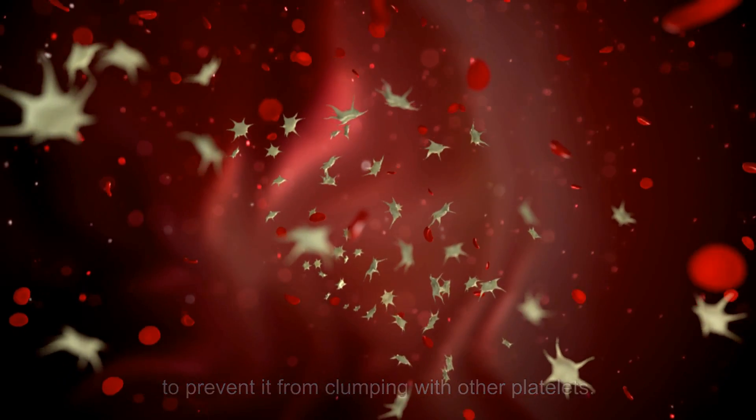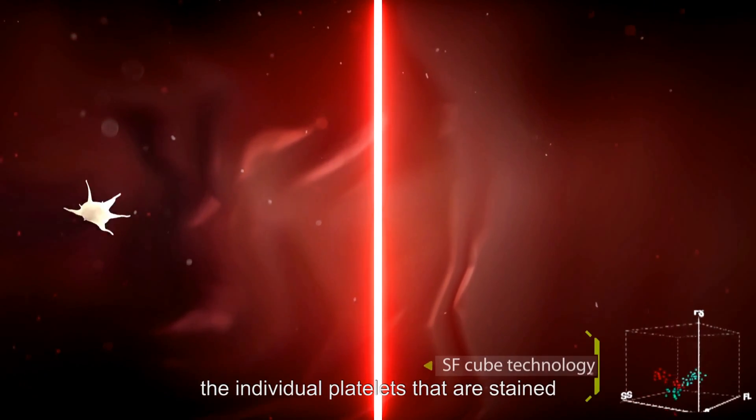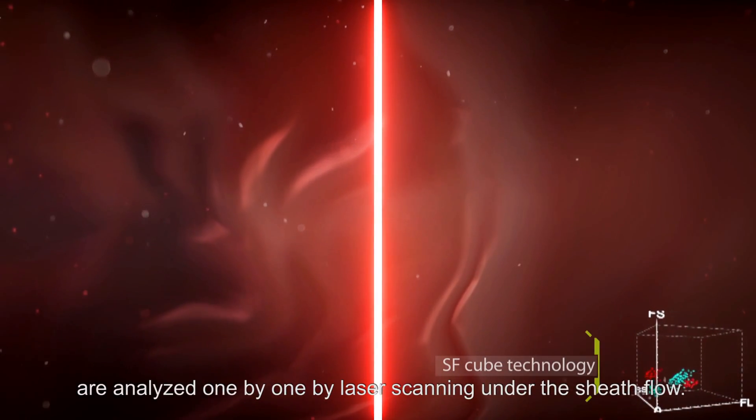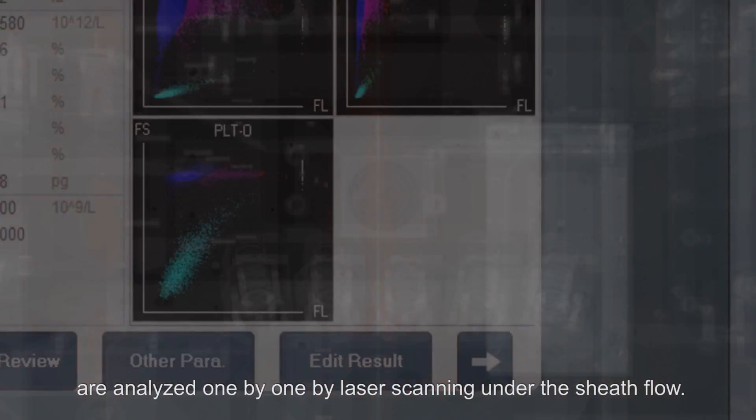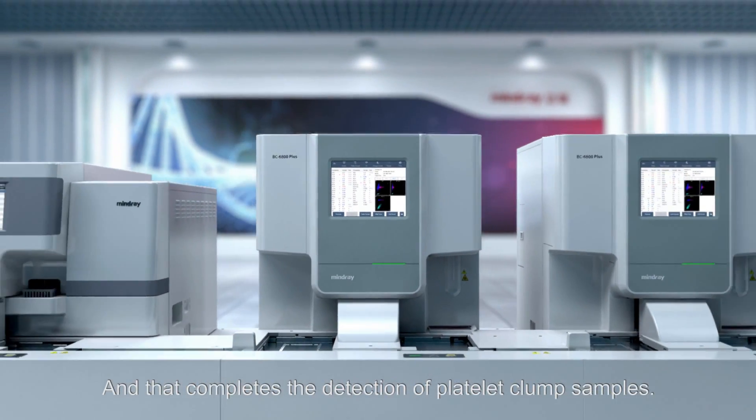Finally, after depolymerization, the individual platelets that are stained are analyzed one by one by laser scanning under the sheath flow, and that completes the detection of the platelet clump samples.